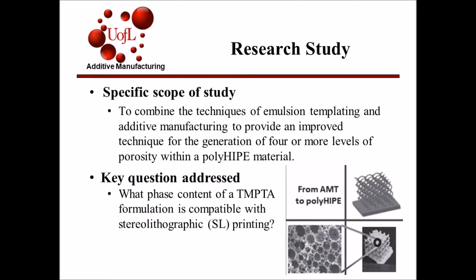The specific scope of study for this paper is to combine the techniques of emulsion templating and additive manufacturing to provide an improved technique for the generation of four or more levels of porosity within a polyHIPE material. Emulsion templating is a method in which a highly viscous paste-like emulsion, defined as having more than 74% of the volume as dispersed droplets within a continuous external phase. If the external phase is made of a monomer, polyHIPEs are produced when the emulsion is exposed to high temperatures in a process known as thermal polymerization. This paper seeks to use an emulsion formulation of TMPTA as the feedstock for an SL printer and determine if multi-levels of porosity can be produced.